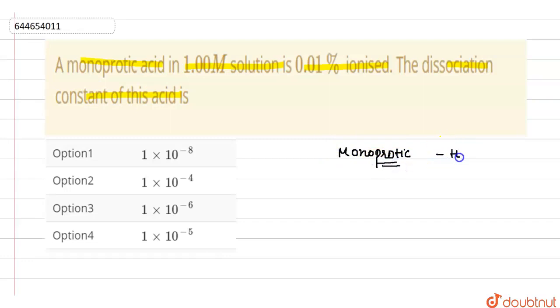For them, value of K or dissociation constant is equal to C alpha square. And value of C given here is 1 mole and alpha is 0.01 percent, that means it will be equal to 0.01 upon 100.